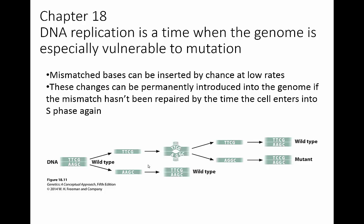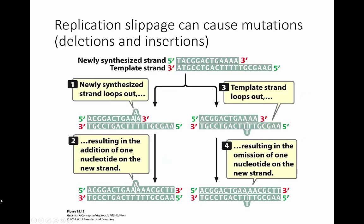However, if the cell is dividing really rapidly, there may not be time for all mismatches to be fixed, and this kind of mistake can actually be propagated. The top strand should have coded for an A but instead coded for a G. If that cell quickly undergoes another DNA replication before it gets fixed, we propagate a mutant, which in the next S phase will permanently put another base into the DNA.